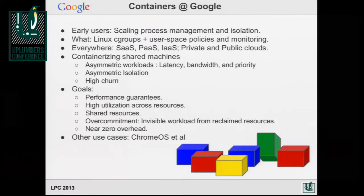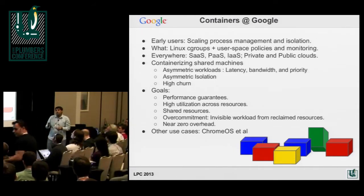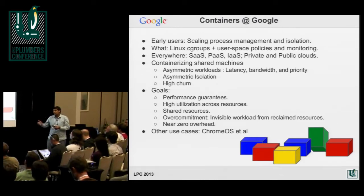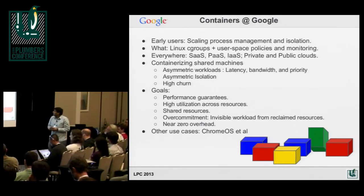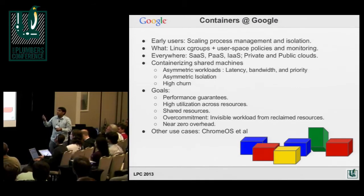Containers means a different thing for different people. At Google, containers that we use today is just cgroups for resource isolation, for accounting and stuff. We don't use namespaces today; we are working on it, but retrofitting namespaces into what we have today takes some time. We build a lot of stuff above cgroups to provide the service and interface that users can see and use, and they know how to specify some resources and get them.